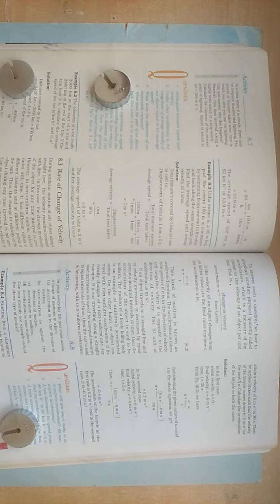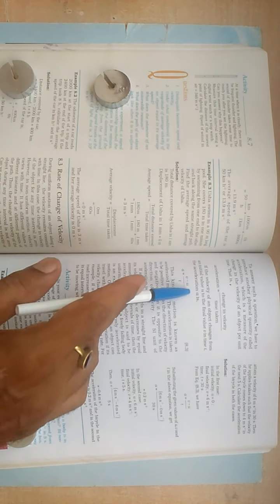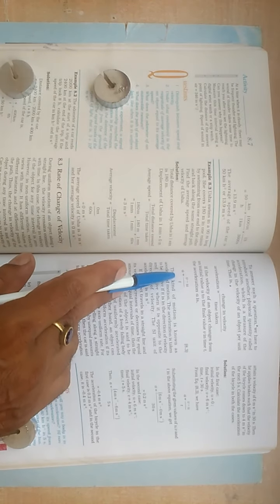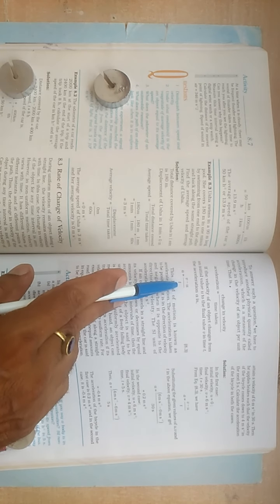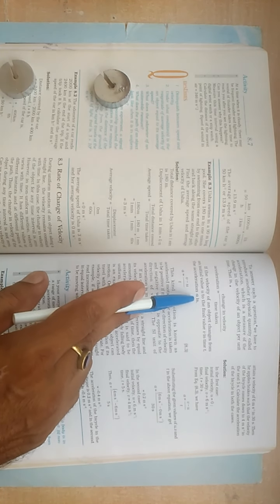So this is the difference between uniform acceleration and non-uniform acceleration. Acceleration is the rate of change of velocity, denoted by a. The formula is a = (v - u) / t, final velocity minus initial velocity upon time. So this is all about uniform and non-uniform acceleration. Clear? Thank you.